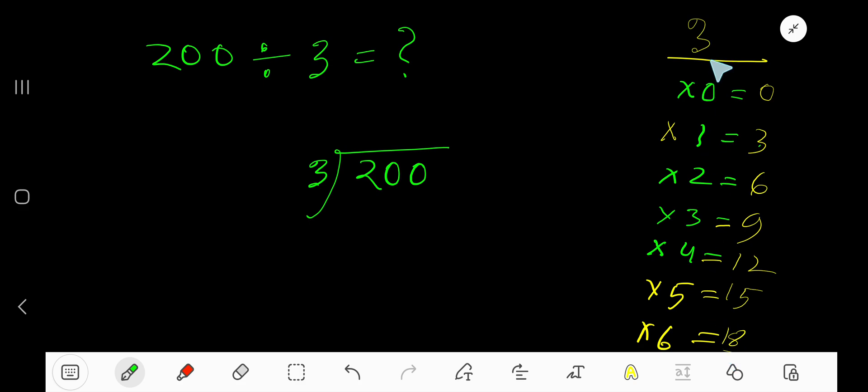Actually, to find the multiplication table of 3, just add 3 to the previous step. 0 plus 3 is 3. 3 plus 3 is 6. 6 plus 3 is 9. 9 plus 3 is 12. 12 plus 3 is 15. 15 plus 3 is 18. This process will continue.